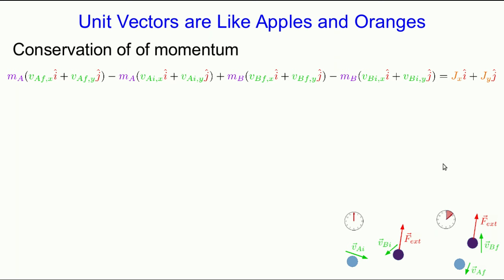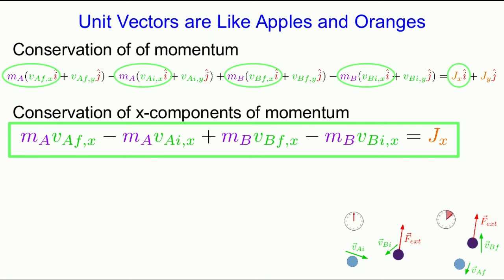Well, our i hat and j hat vectors work just like apples and oranges. We can't simplify any further than having our vectors written in terms of components times i hat and j hat. And so we can do exactly the same thing. We can take our great big ugly equation, and we can take out the i hat parts. And we don't need the i hats because we know there's an i hat on every single one of those terms.